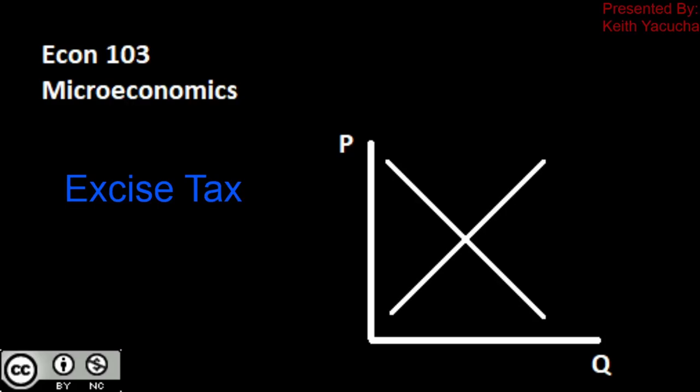Welcome back to Econ 103, Introduction to Microeconomics. In this video, we're going to be taking a look at how to apply an excise tax and the calculations to find all the different variables associated with it. The expectation is that you've already taken a look at our price controls video, already have an understanding of what an excise tax is, how it's applied to our curves, and you're here just for the walkthrough on the mathematical side of it.